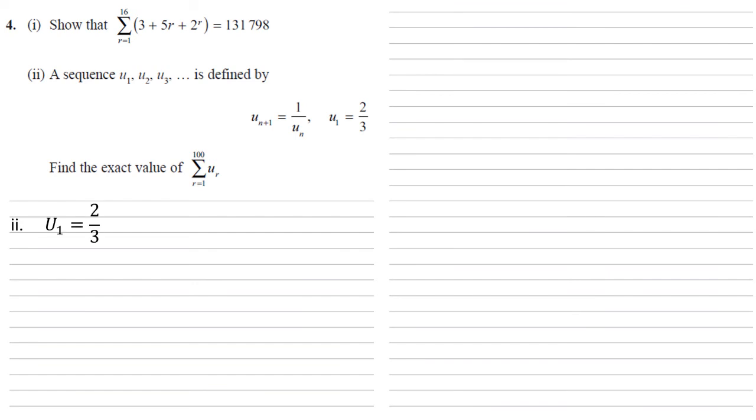Our first term, u1 is 2 over 3, as we've been told. Using our formula for u n plus 1, we can see that u2 is going to equal 1 over 2 thirds, which is 3 over 2.